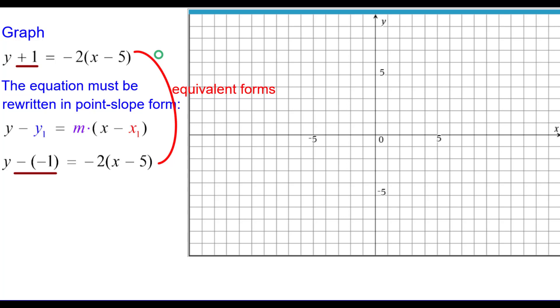These equations are called equivalent forms of each other. They look different but represent the same set of ordered pairs. We can now identify x sub 1, y sub 1 and the slope. x sub 1 is positive 5, y sub 1 is negative 1 and the slope is negative 2.